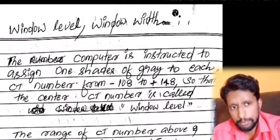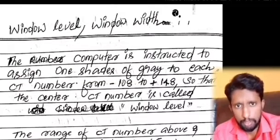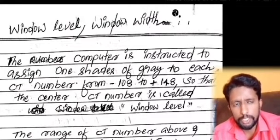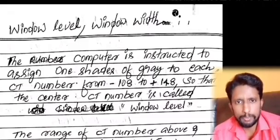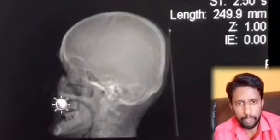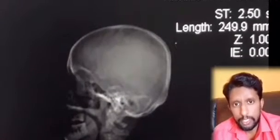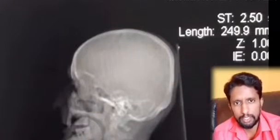Window level refers to the center CT number used to adjust the contrast of a radiological image. Dragging the mouse to the left makes the image darker, and dragging to the right makes it brighter. This contrast adjustment is called window width and window level.